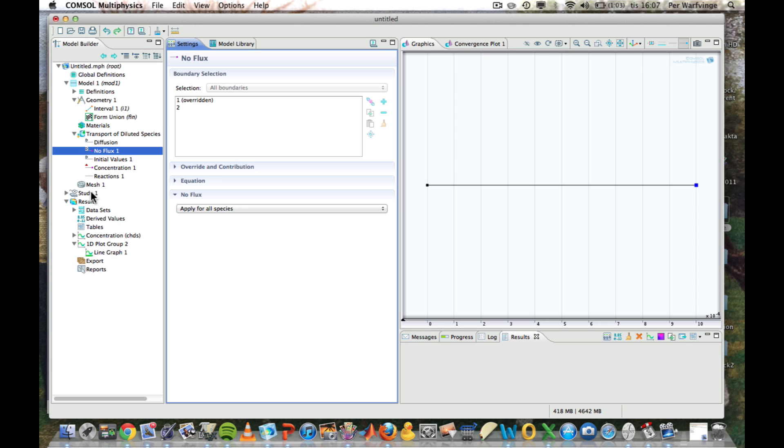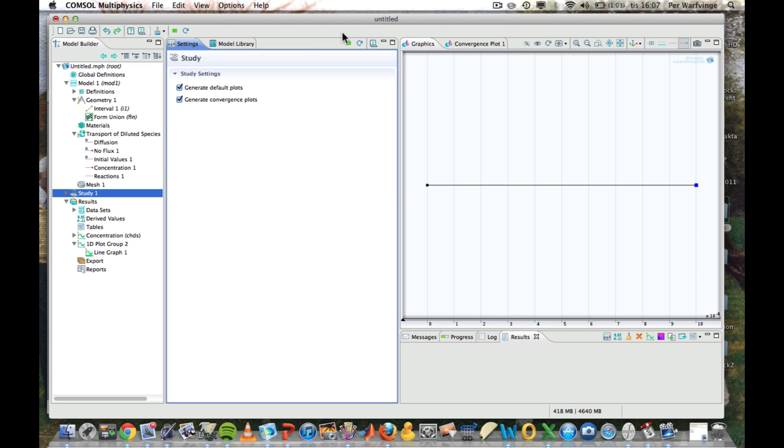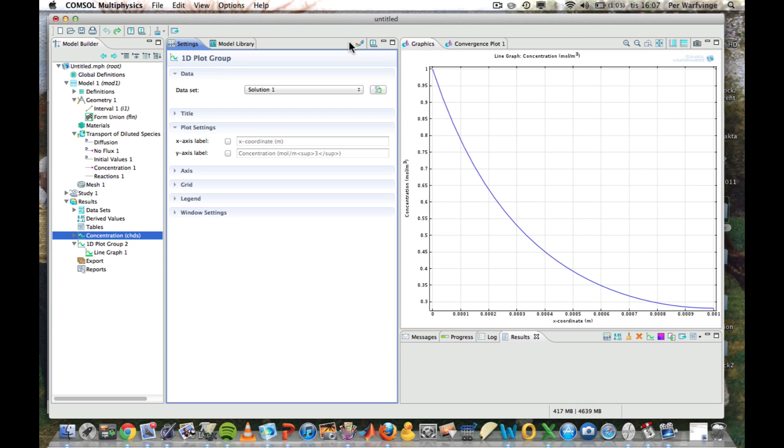We don't need to remesh it, so we just study, get a new concentration plot. Now we see that the concentration to the very right is something in the range of 3 rather than 0.